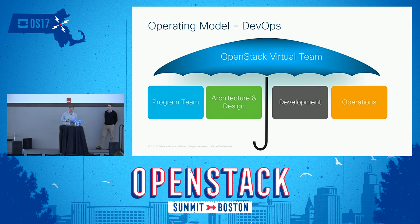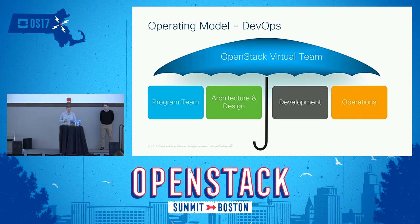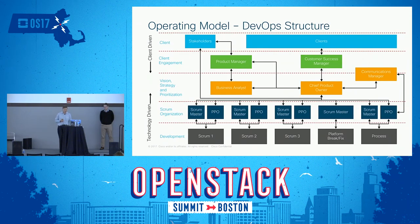The first is our operating model. We run a DevOps organization. We have an OpenStack virtual team with four teams that work together on a DevOps model. It's a complex diagram, and I'm going to take you through a few layers of it.